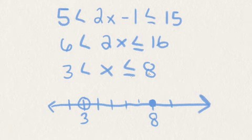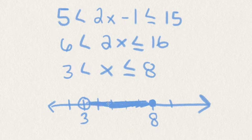Because this is all one line altogether, 3 is less than x, and also x is less than or equal to 8, then I'm going to connect both of those dots with a shaded line to show that every single number in between those two numbers works.